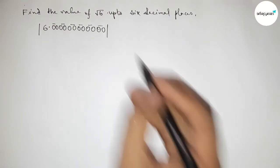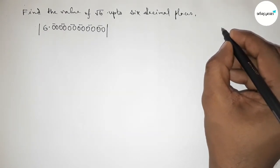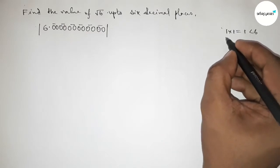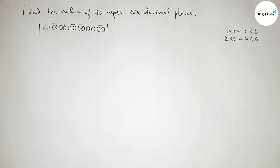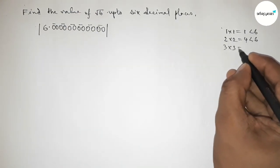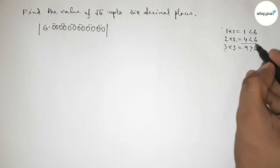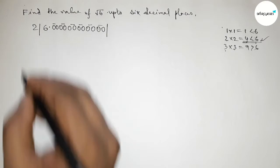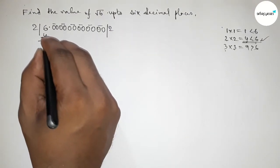Next, take a number and multiply it by itself such that the result is less than 6 and almost near 6. If we take 1, 1×1=1, less than 6. If we take 2, 2×2=4, less than 6. If we take 3, 3×3=9, greater than 6. So we take 2, since 4 is almost near and less than 6. So writing 2, and 2×2=4.